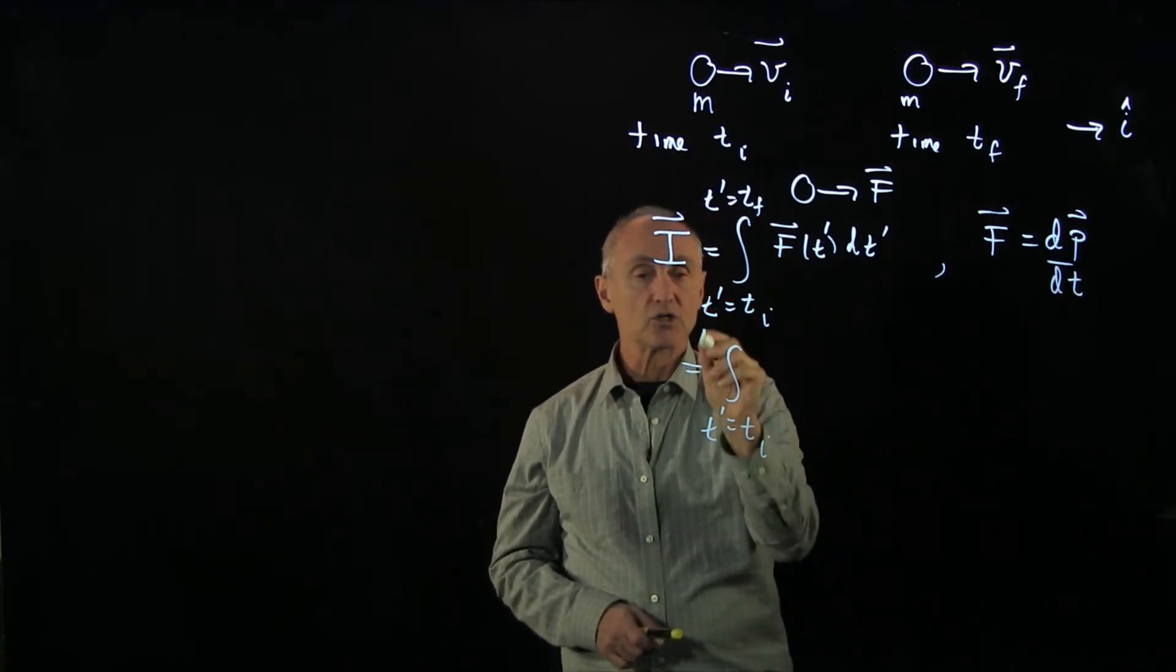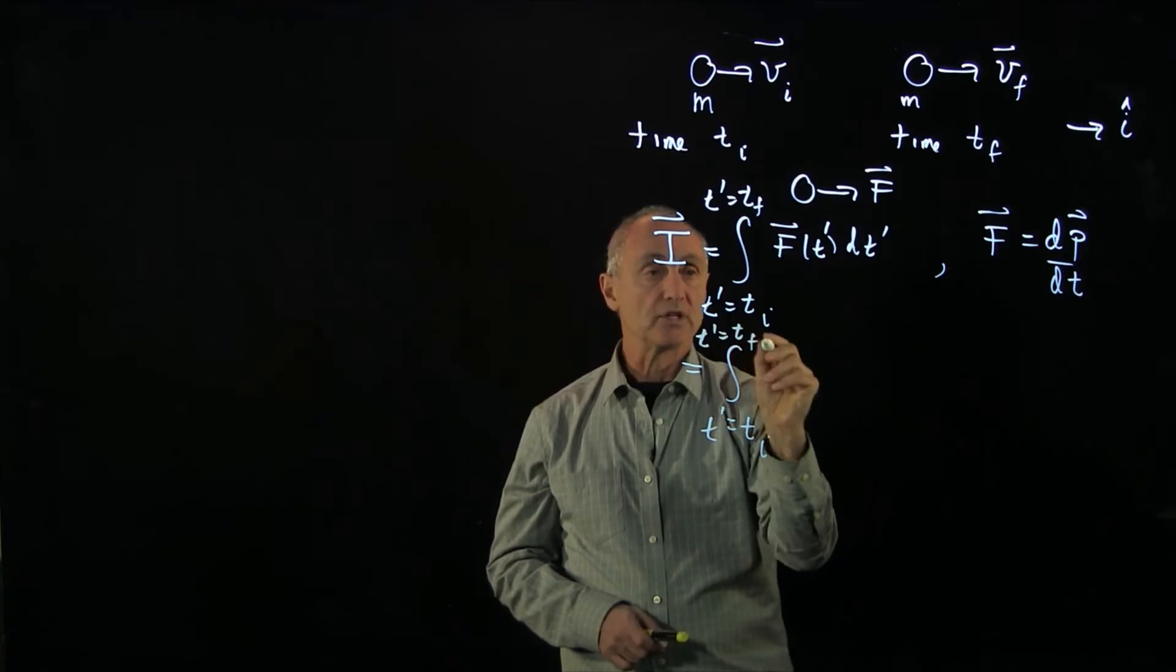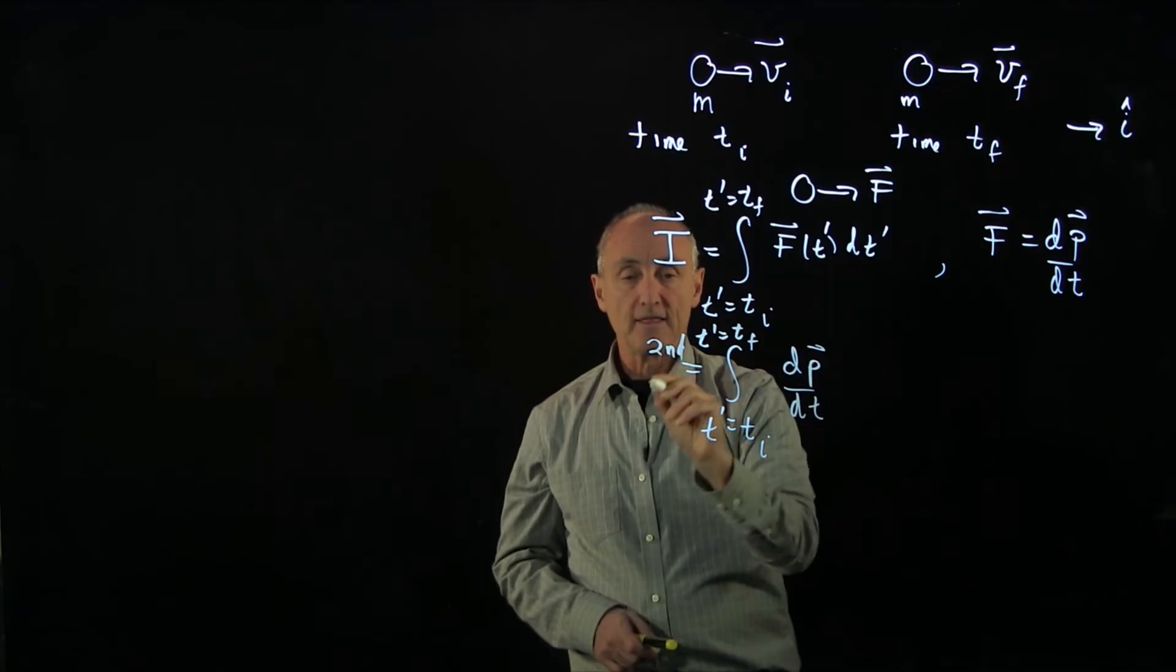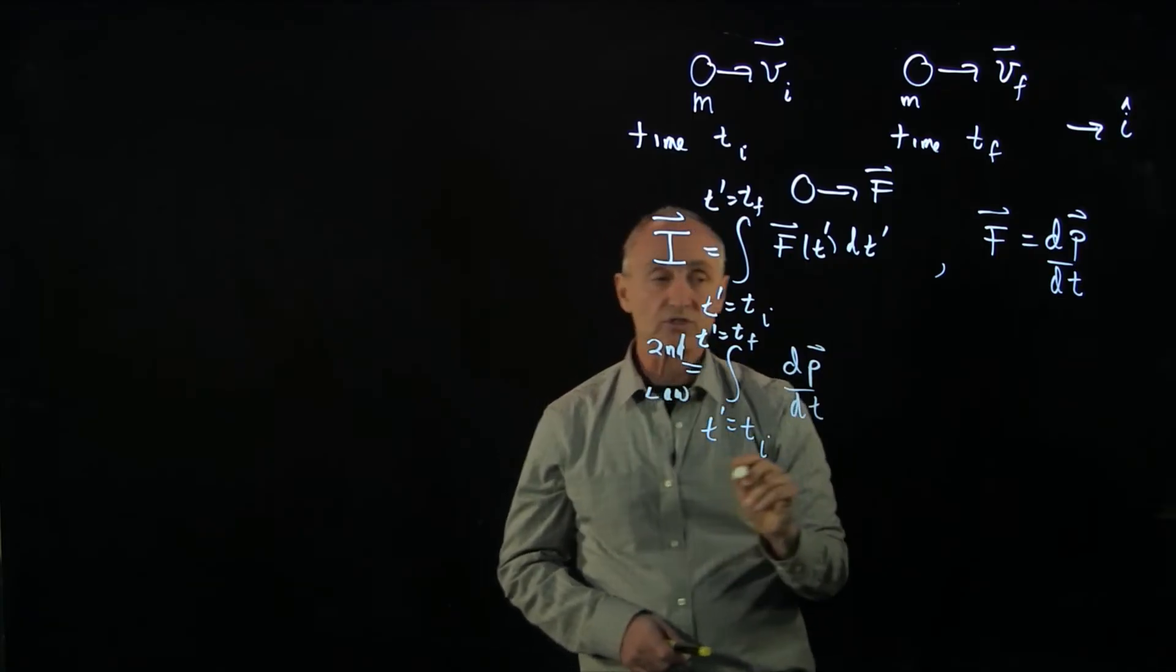t prime, t initial, t prime equals t final of dp dt. I'll just make a note that we've now applied Newton's second law.